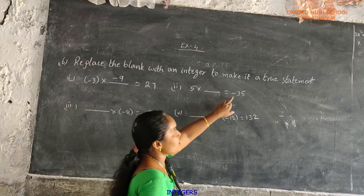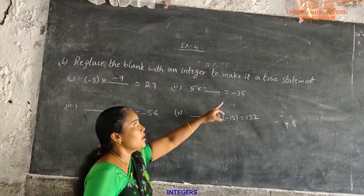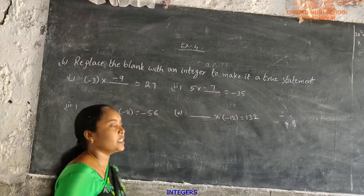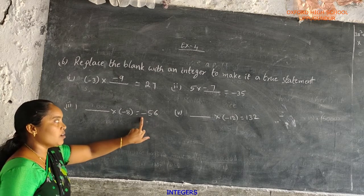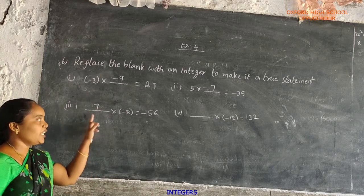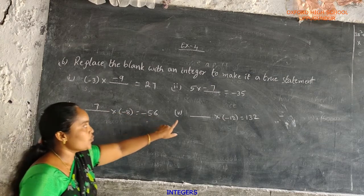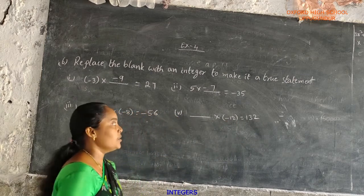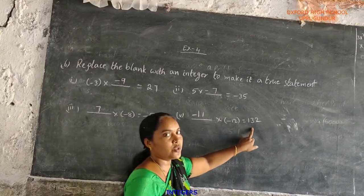Third one: blank into minus 8 equals minus 56. The answer has minus value, and question already has minus, so the blank is positive: 7. Therefore, 7 into minus 8 equals minus 56. Fourth one: blank into minus 12 equals 132. 132 divided by 12 equals 11, so the answer is minus 11. Minus 11 into minus 12 equals 132.